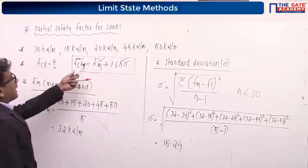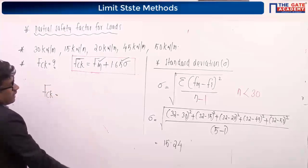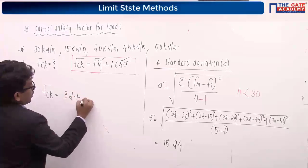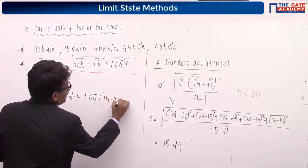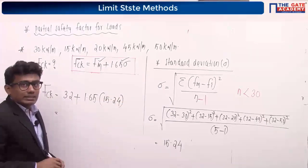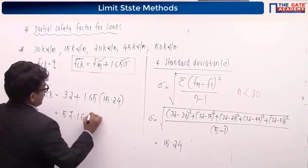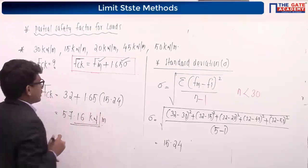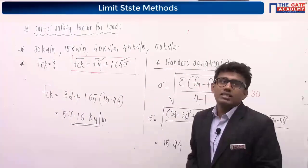Now we can easily find the characteristic load. Fck = Fm + 1.65 × sigma = 32 + 1.65 × 15.24. Calculating this gives the characteristic load as approximately 57.16 kilonewton per meter.